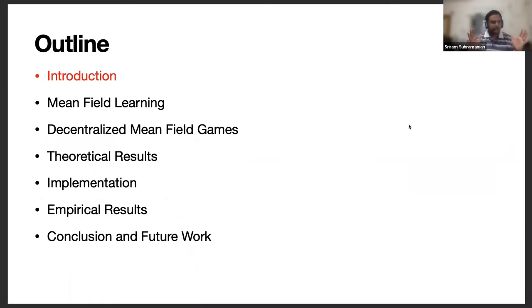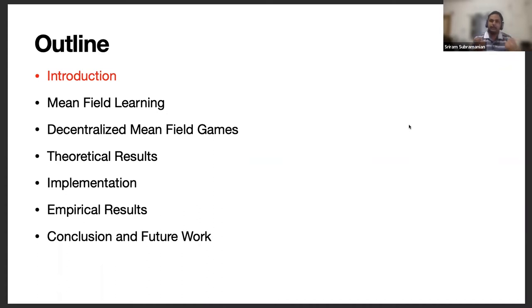The outline of my talk today will take this format. First, I will introduce the problem I'm interested in, and then I will talk about a particular technique in literature called mean field learning — a very interesting and novel technique. I will formally introduce this technique, then talk about a particular paradigm we introduce in our work called decentralized mean field games. I'll present some theoretical results, a practical implementation technique, some empirical results, and finally conclude with some future work directions.